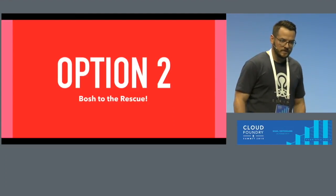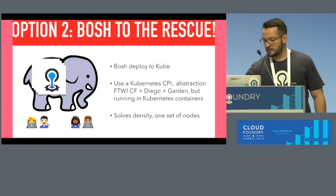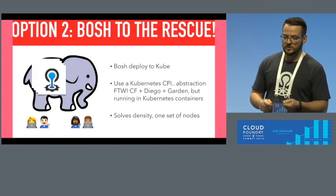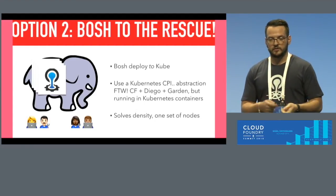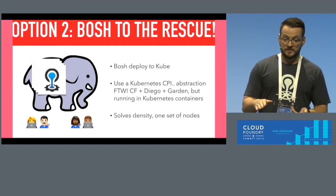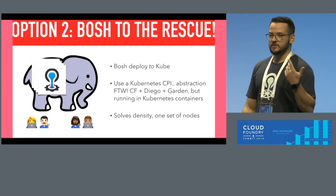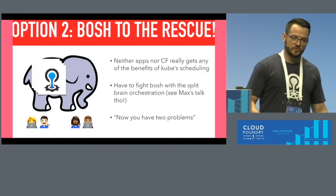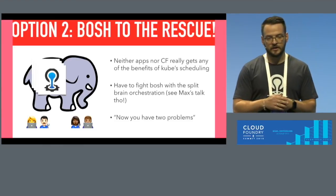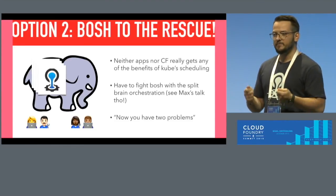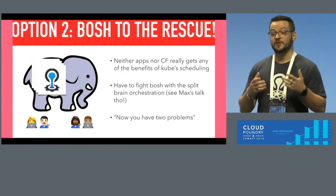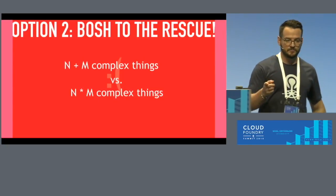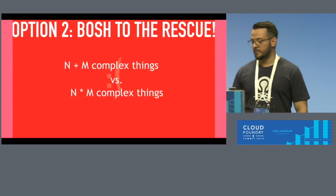Option two is BOSH to the rescue: use BOSH and deploy Cloud Foundry to Kubernetes using a Kubernetes CPI, deploying containerized CF on top of Kubernetes. This solves density — you only have one set of nodes. But you're deploying a complex thing on top of another complex thing, and neither the CF apps nor CF gets real benefits of the Kube scheduler. You had N plus M complex things; now you have N times M.